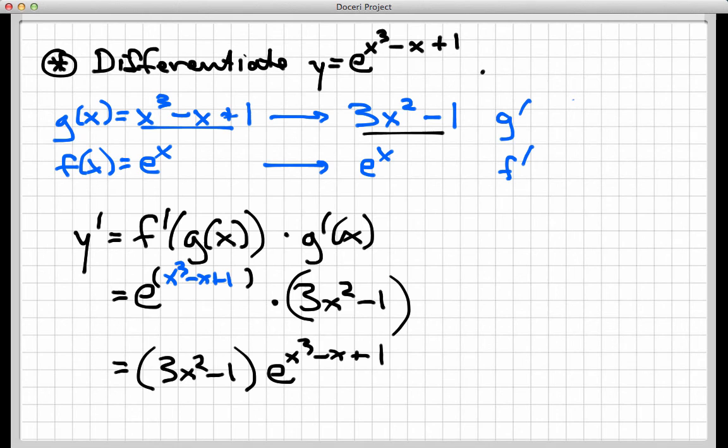So just a word about this example here, a couple of words. Whenever you see a function that's of the form e to the something, e to some power, that's not just a straight variable, e to a function power. This happens quite a lot. You're going to be using the chain rule.